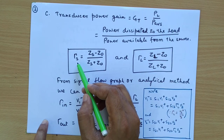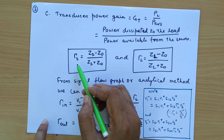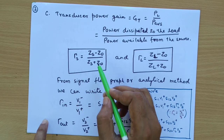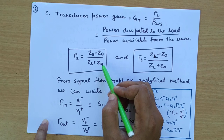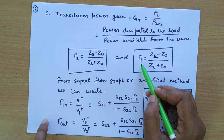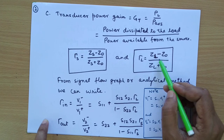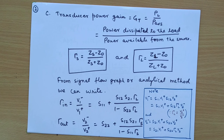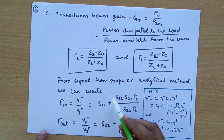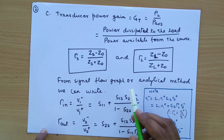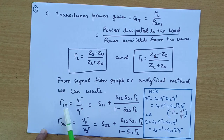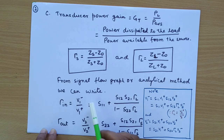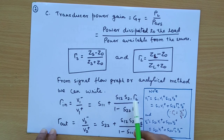We already know gamma_S, the reflection coefficient looking into the source, is (Zs minus Z0) divided by (Zs plus Z0). The reflection coefficient at the load is (ZL minus Z0) divided by (ZL plus Z0). We have also studied signal flow graphs in previous videos, and found that the input reflection coefficient is S11 plus S12·S21·gamma_L divided by (1 minus S22·gamma_L).